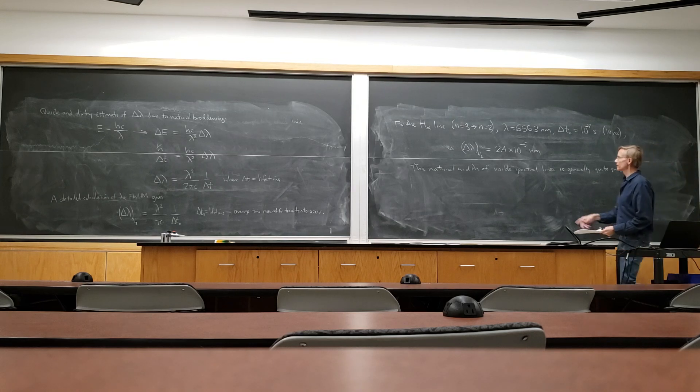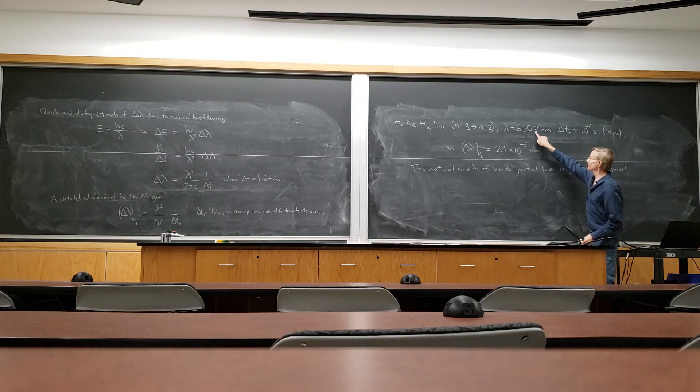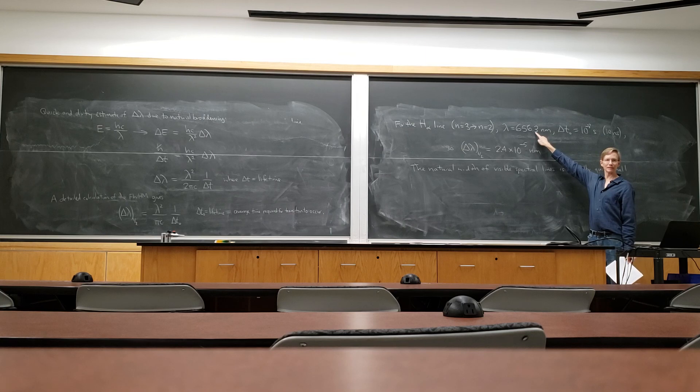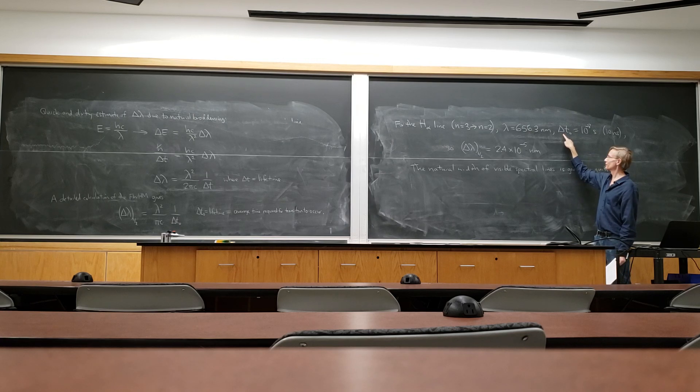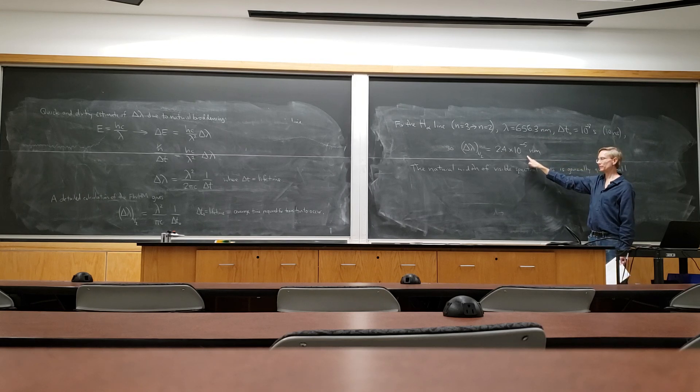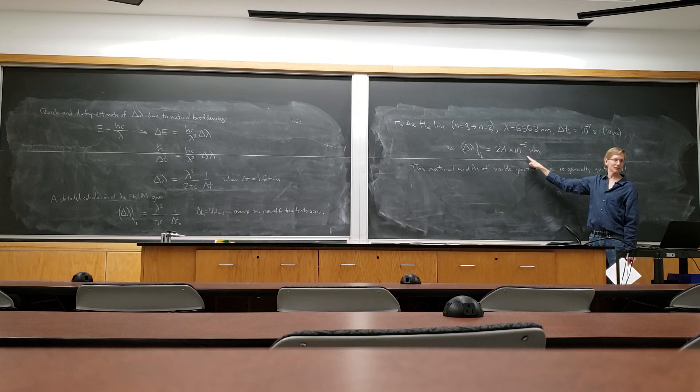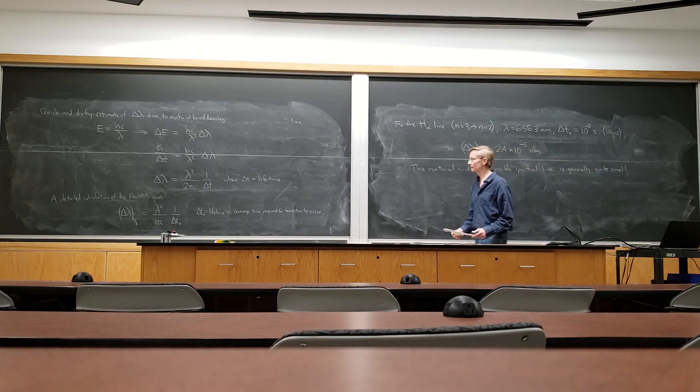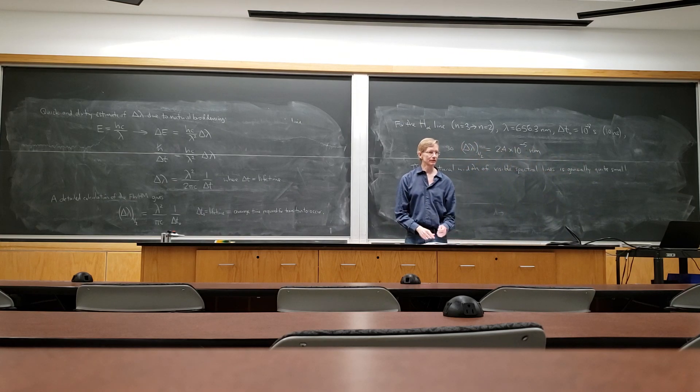I mean, that's 10 to the minus 5 nanometers. This is 656.3, and that decimal place is the tenth of the nanometer. So if it really were 656.300, this would be saying 656.301 wouldn't cause the transition because it's many natural widths away. So in the visible part of the spectrum, widths tend to be very small.